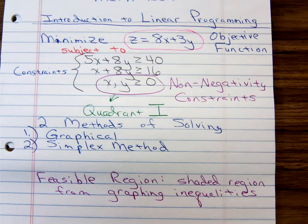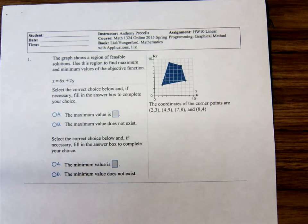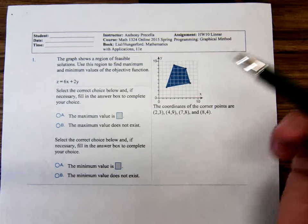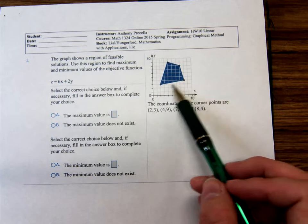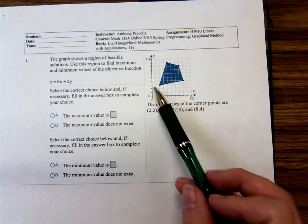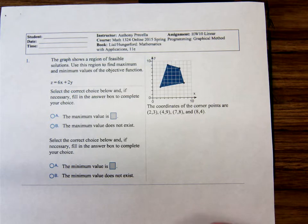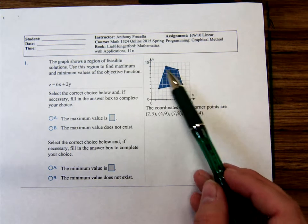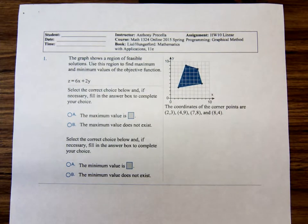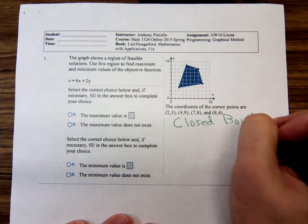Here's the first feasible region example. The graph has been drawn; notice all the boundary lines are solid lines bordering the shaded region, and the corners have been found for us. This feasible region does not keep going in any direction — it's enclosed. This is referred to as a closed bounded feasible region, meaning it doesn't extend forever in any direction and all sides are bounded by solid lines.